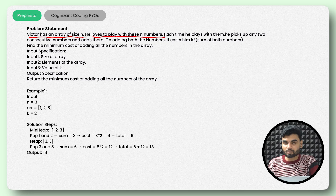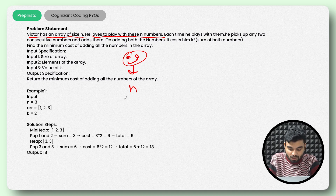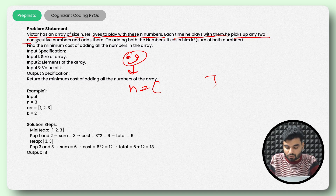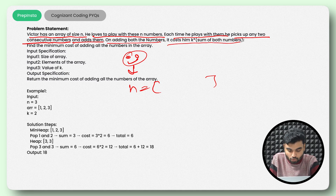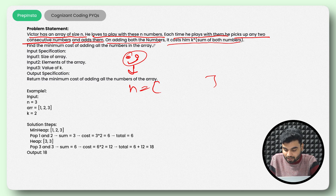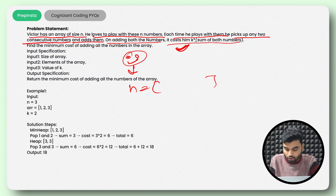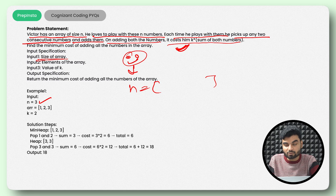Now the next problem statement is also a previous year question from the Cognizant exam. Victor has an array of size N and loves to play with these N numbers. Each time he plays, he picks any two consecutive numbers and adds them. On adding both numbers, it costs him K times the sum. Find the minimum cost of adding all numbers in the array. To understand the input: first input is the size N, second is the array elements, third is the value K.